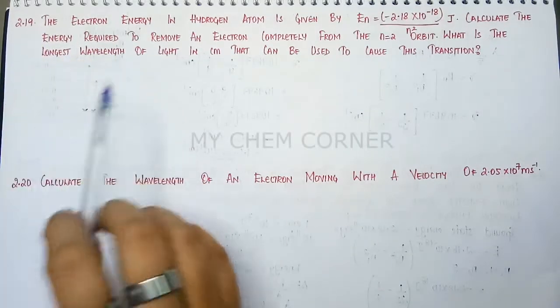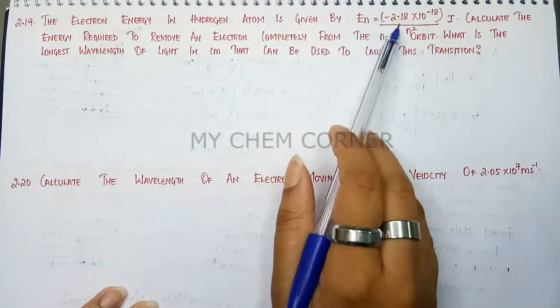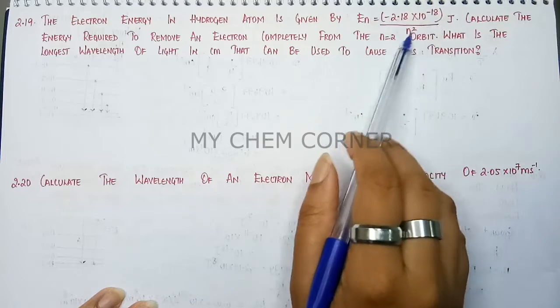Next question is 2.19. The electron energy in a hydrogen atom is given by En equals minus 2.18 times 10 to the power minus 18 by N square Joule.